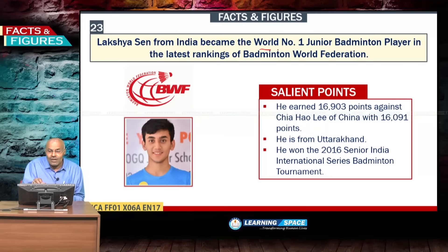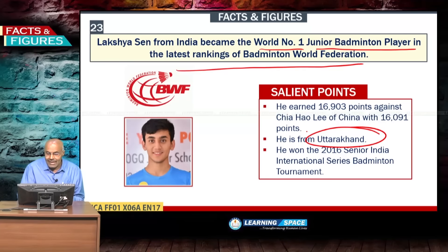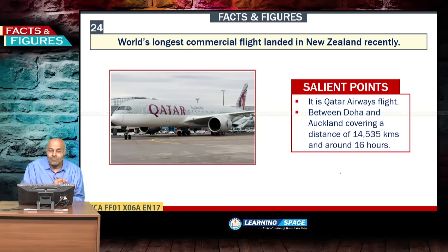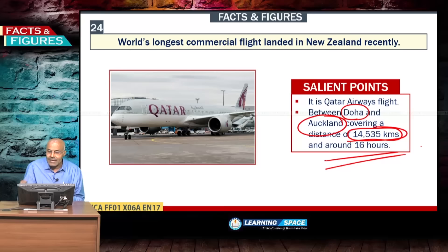Lakshya Sen from India became the world's number one junior badminton player in the latest BWF rankings. He is from Uttarakhand and won the 2016 Senior India International Series badminton tournament. The world's longest commercial flight was recently undertaken between Doha and Auckland, New Zealand — a distance of 14,535 kilometres covered in around 16 hours.